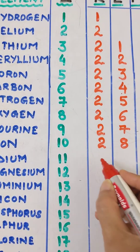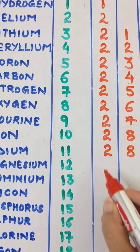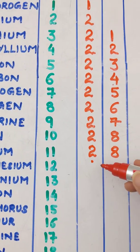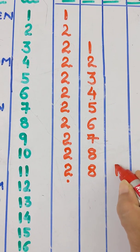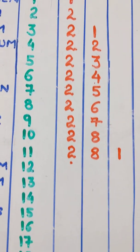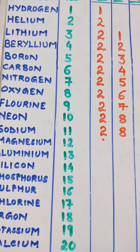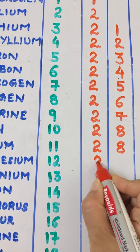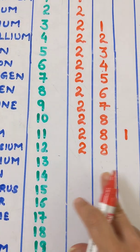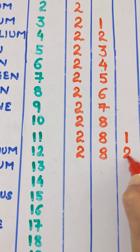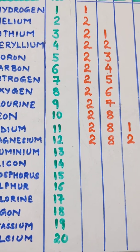Sodium is the first element where electrons now come into the M shell. We put 2 electrons in K shell, 8 electrons in L shell, and the remaining 1 electron in M shell — configuration 2, 8, 1. Magnesium has an atomic number of 12: 2 in K, 8 in L, and 2 remaining electrons in M shell — configuration 2, 8, 2.